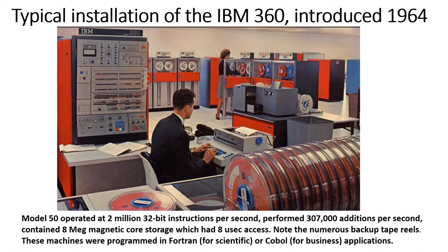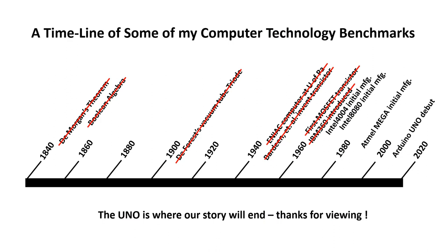The IBM 360 is a groundbreaking machine of the early days and these hung around until very late in the 1970s. Now looking at our timeline, we've covered a lot of items and we're up to around the 1970s where the Intel 4004 appears — basically the last part of our adventure through computer benchmarks.